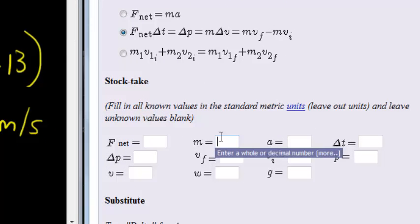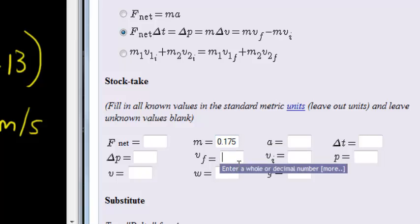So in here, we have 0.175. Remember, we need to use standard metric units. Then we have our future velocity was negative 4.8. Again, don't forget that. Our initial velocity, 13.